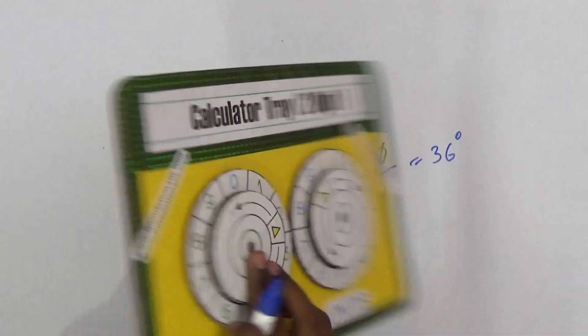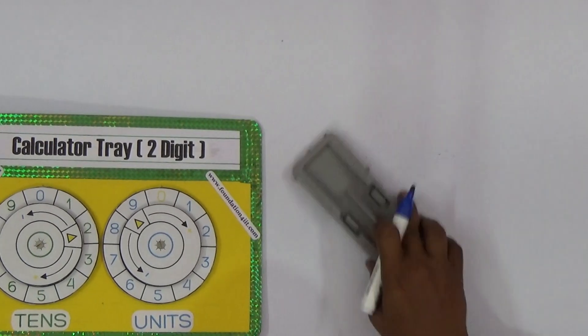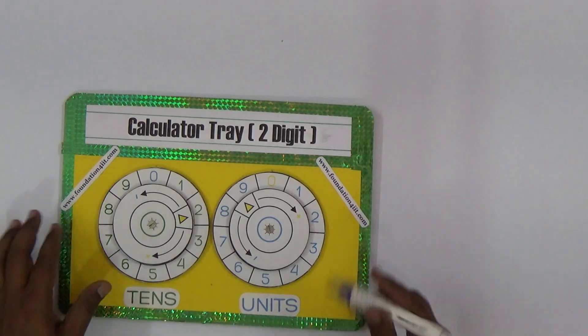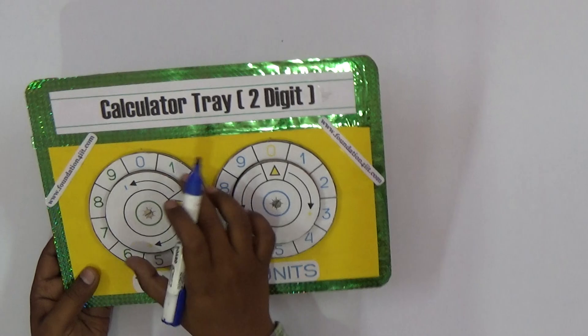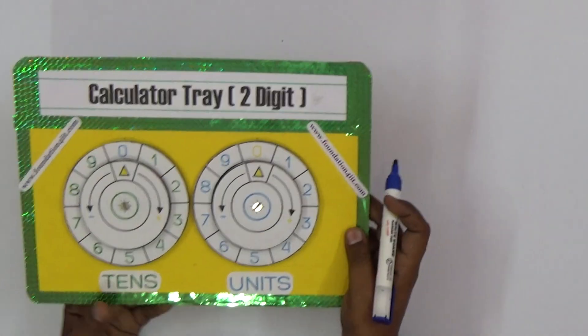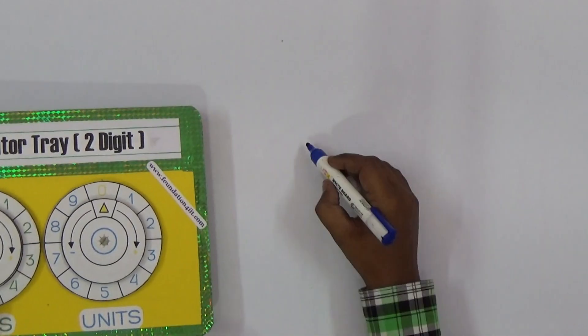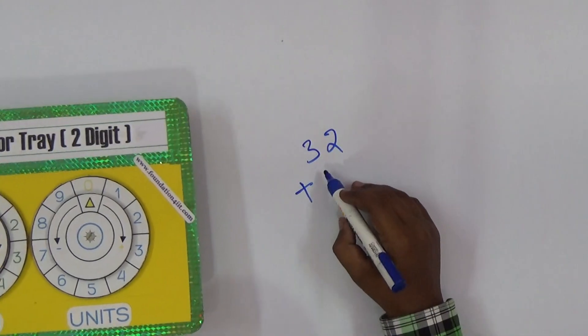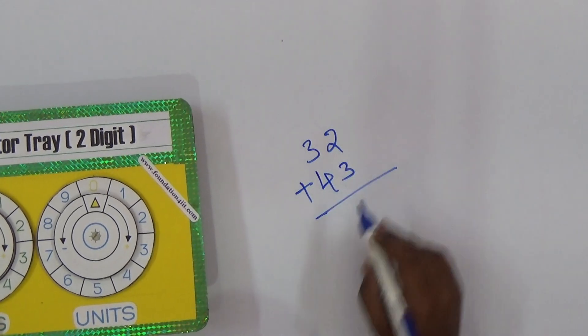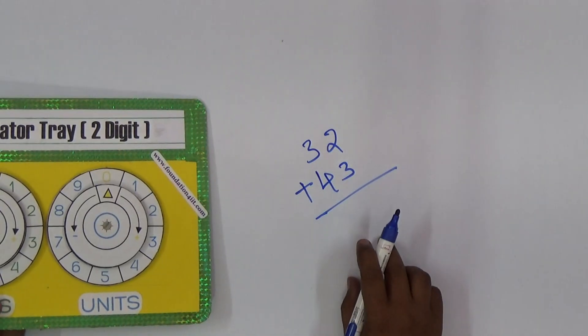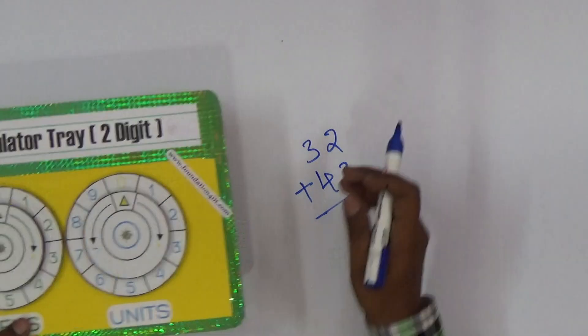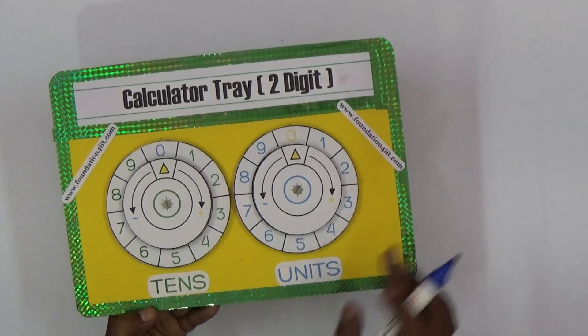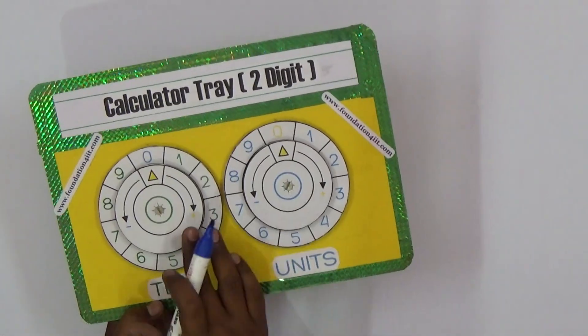Now see this project - what it is and how to use it. For example, I want to add 32 plus 43. I want to do addition of these simple numbers. Now 32 - in this, this is the tens place and this is the units place. The yellow dot you can take to 3 and this is 2. You can observe 32.